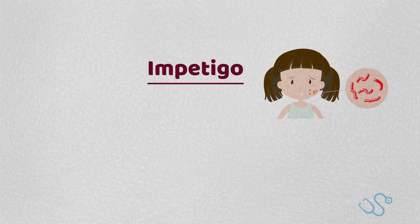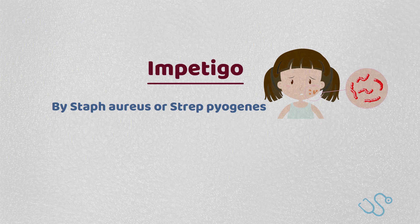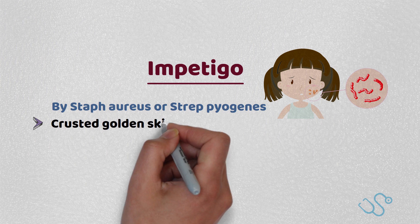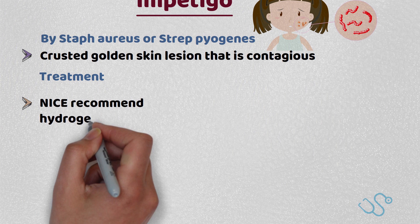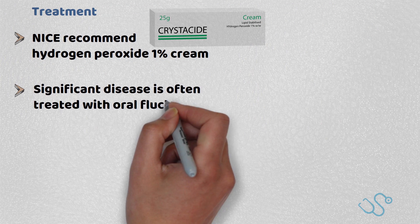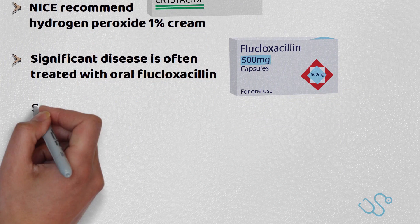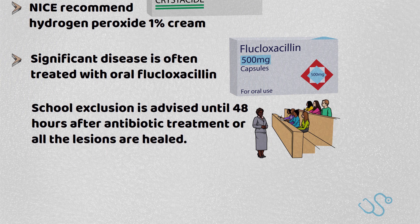Impetigo is a bacterial skin infection typically caused by Staphylococcus aureus or Streptococcus pyogenes, with most presentations occurring around the face or exposed skin. It often presents as a crusted, golden skin-like lesion that is quite contagious. NICE now recommends hydrogen peroxide 1% cream in patients with localised disease to avoid antibiotic resistance. Topical antibiotics such as fusidic acid are also an alternative, and significant disease is often treated with oral flucloxacillin. Exclusion is advised until 48 hours after antibiotic treatment or if all lesions are healed.